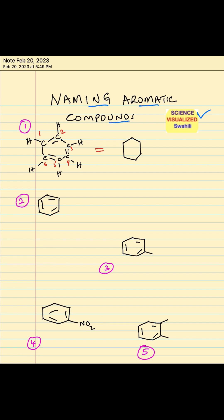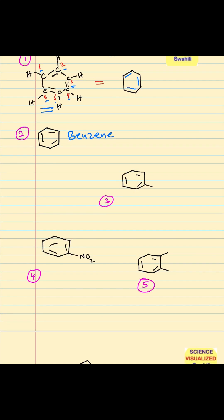A quick example of an aromatic compound is one with six carbons. Between carbon one and two you have a double bond, carbon three and four are double bond, and carbon five and six are double bond. That is the skeletal structure of that compound — that's benzene.